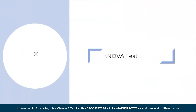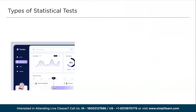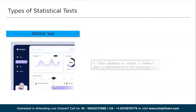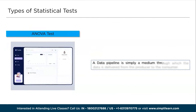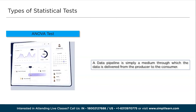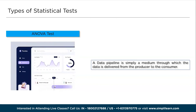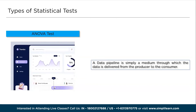Moving ahead to the eleventh position, we have the ANOVA test. ANOVA, or analysis of variance, is used to compare three or more groups or treatments and determines if there are significant differences among the group means. ANOVA assesses the variation within and between groups by calculating the F-statistic and generating a p-value. If the p-value is below the chosen significance level, it suggests that at least one group's mean differs significantly from the others.